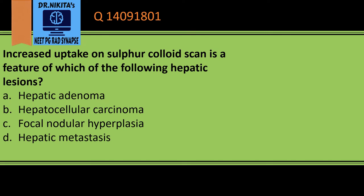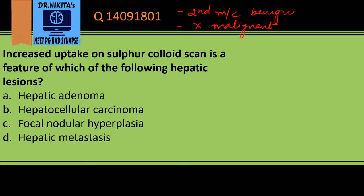FNH contains normal liver elements. It is the second most common benign hepatic lesion — the most common is hemangioma, second most common is FNH. It does not have any malignant potential, so there is no need to resect it.